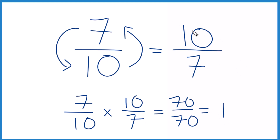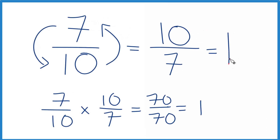The reciprocal for 7 tenths is 10 sevenths. This is an improper fraction — 10 is larger than 7 — so you could convert it to a mixed number. 7 goes into 10 one time with 3 left over, so you could say 1 and 3 sevenths. You can check that: 1 times 7 is 7, and 7 plus 3 is 10, with 7 as the denominator, which stays the same.